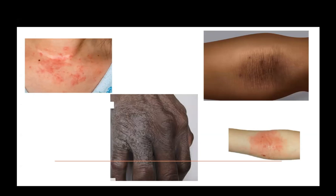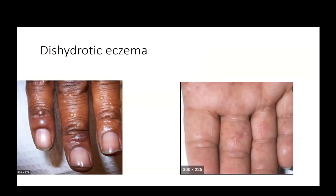Eczema may present with erythematous papules, or with hyperpigmentation and exaggeration of skin markings. In adults it tends to be more localized, with flexural surfaces being classic. You may also see grayish skin on the dorsum of the hand. Dyshidrotic eczema is also common — it is generally vesicular and pruritic. When you see vesicular lesions on the hand, think about dyshidrotic eczema. These often respond well to steroids.